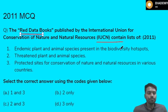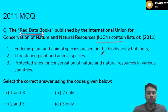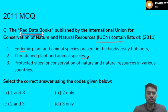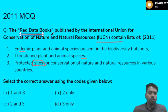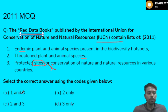There was another 2011 question regarding the Red Data Books of IUCN. Statement 1 said it contains endemic plant and animal species present in biodiversity hotspots. Statement 2 said it contains threatened plant and animal species. Statement 3 said it contains protected sites for conservation of nature and natural resources in various countries. Statement 3 is not true - Red Data Books contain information about endangered flora and fauna, not protected sites. The examiner is voluntarily inserting incorrect information to confuse you. So only Statement 2 is correct.